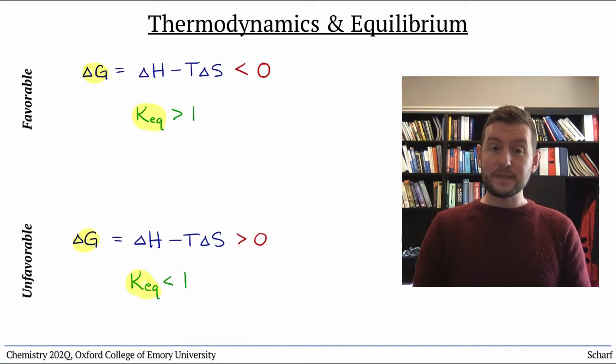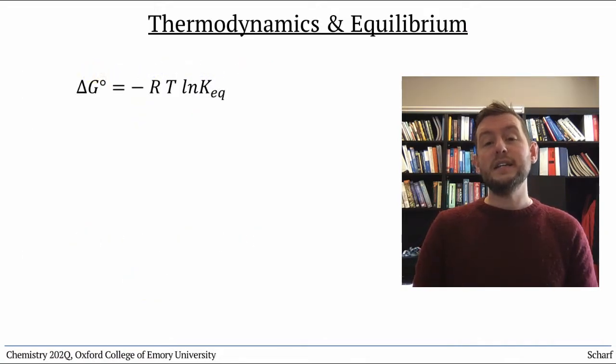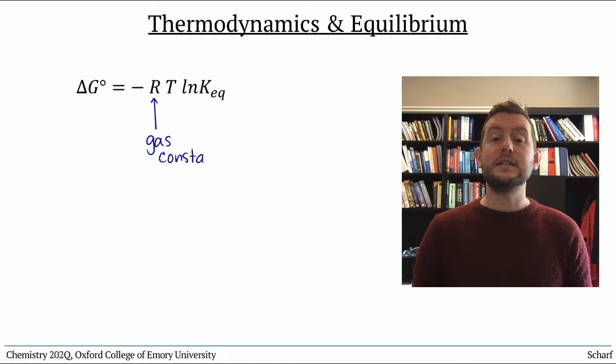And there is! Delta G naught equals negative RT natural log of K_eq, where R is the gas constant and T is the temperature in Kelvin. As you might expect, a large value of K_eq corresponds with a large negative value of delta G naught.